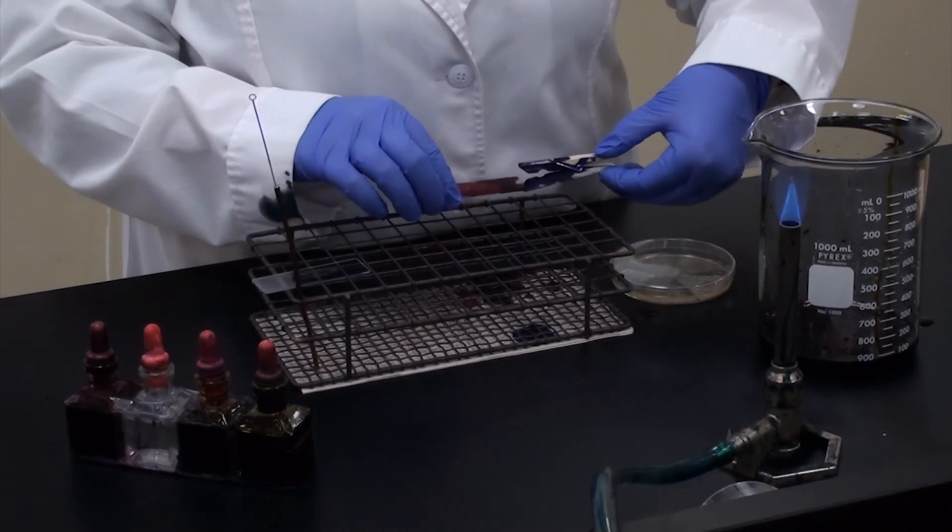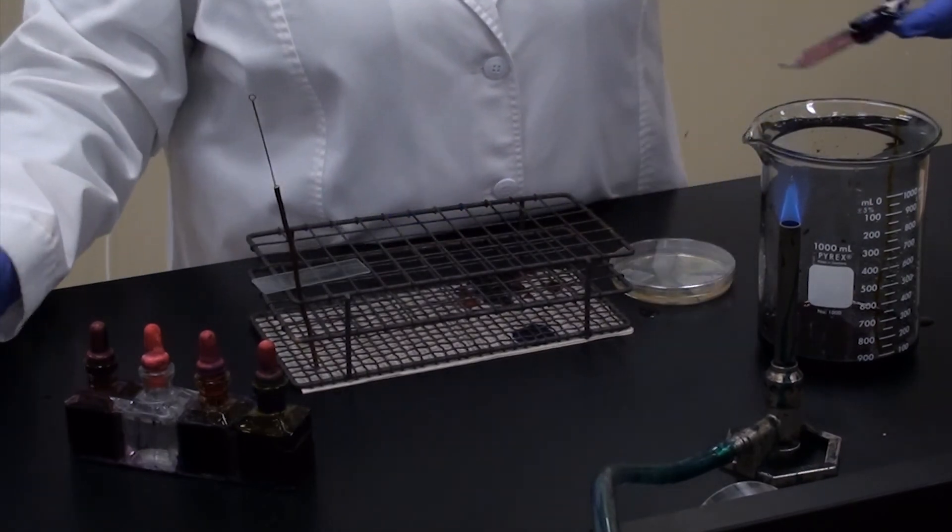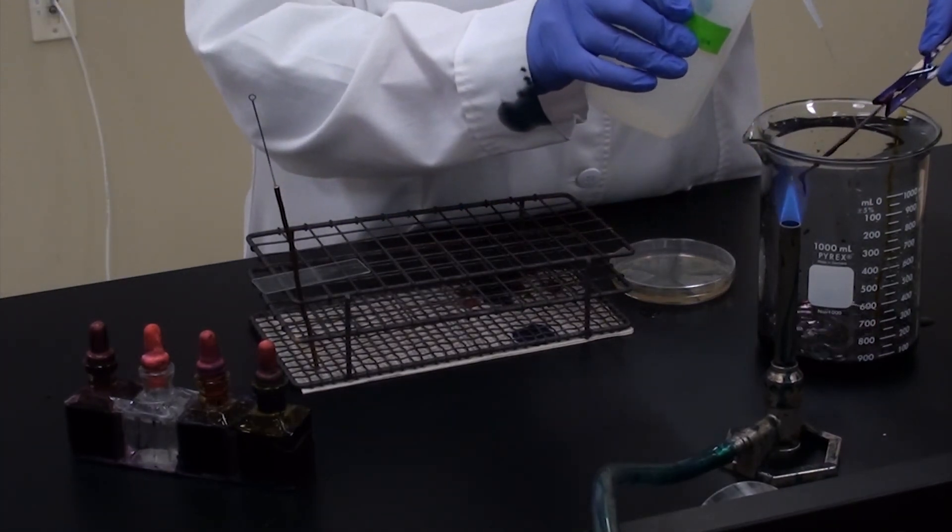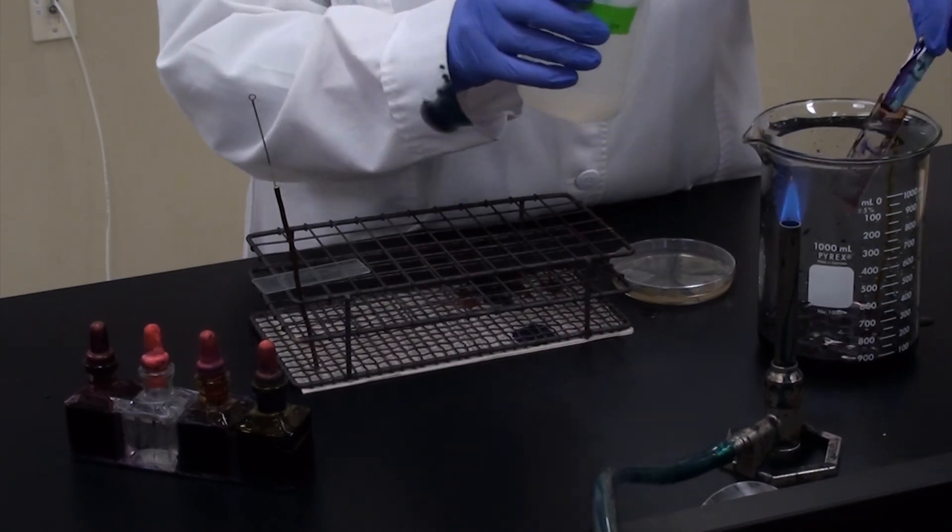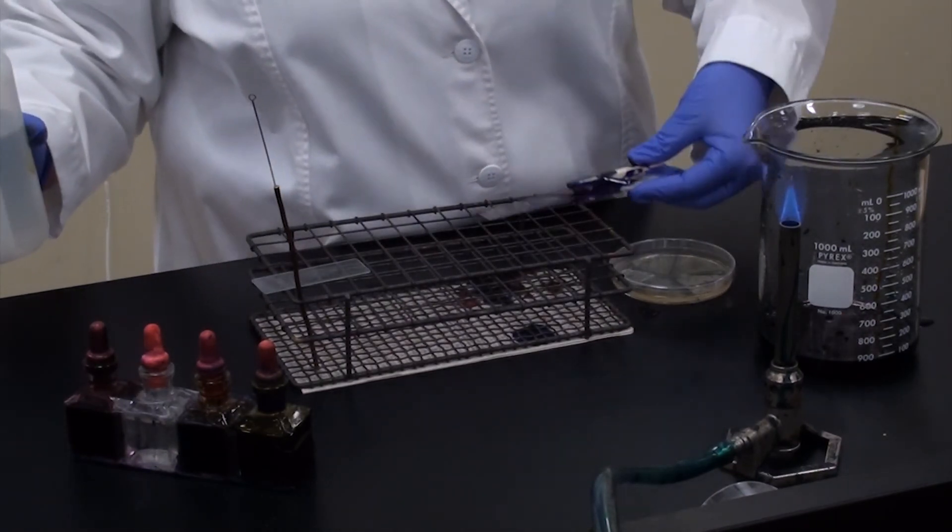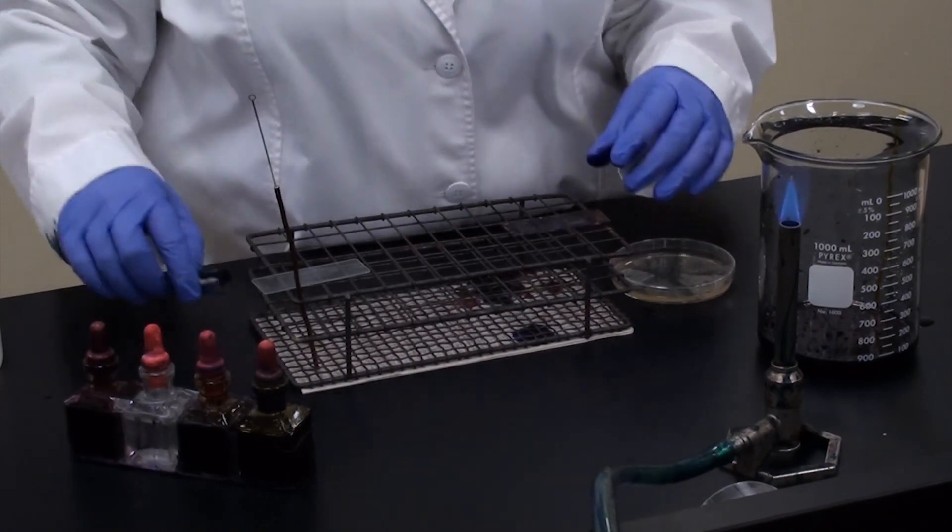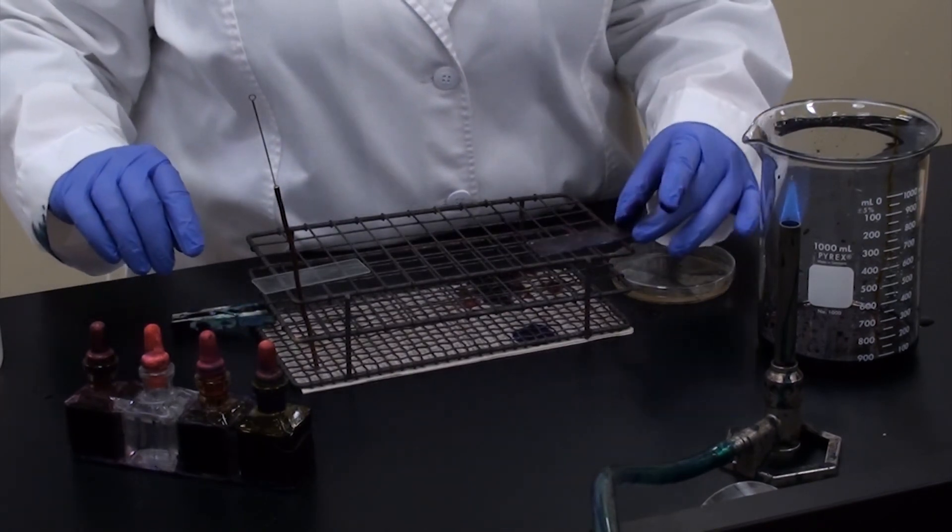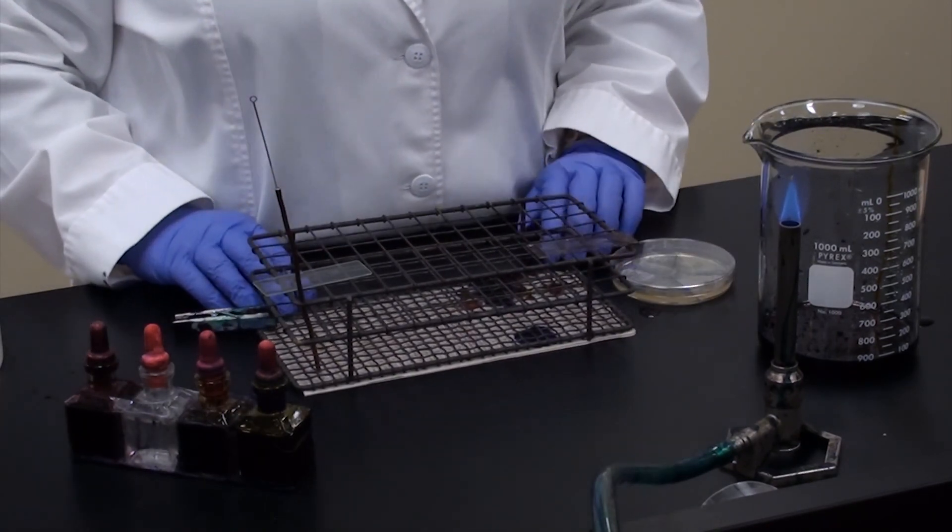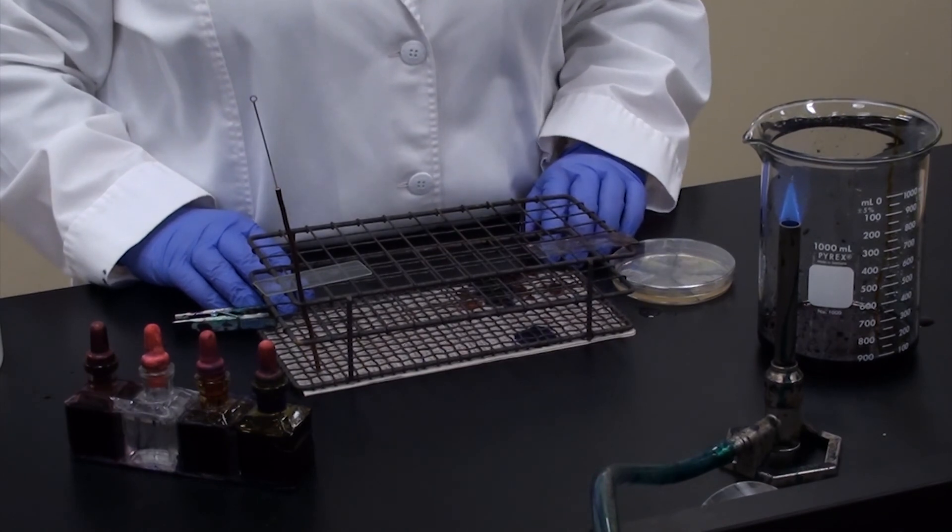And then again, very gently rinse your slide. And then once your slide is air-dried, you can visualize it under the microscope and see which type of cell wall you have. And that's it. Gram-stain!